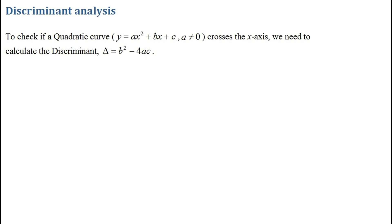We need to calculate the discriminant delta. The formula for delta is b squared minus 4ac. We use the discriminant analysis mostly in order to check if the curve crosses the x-axis at two points, at one point, or if the curve does not cross the x-axis at all. Remember, delta is the value of b squared minus 4ac.